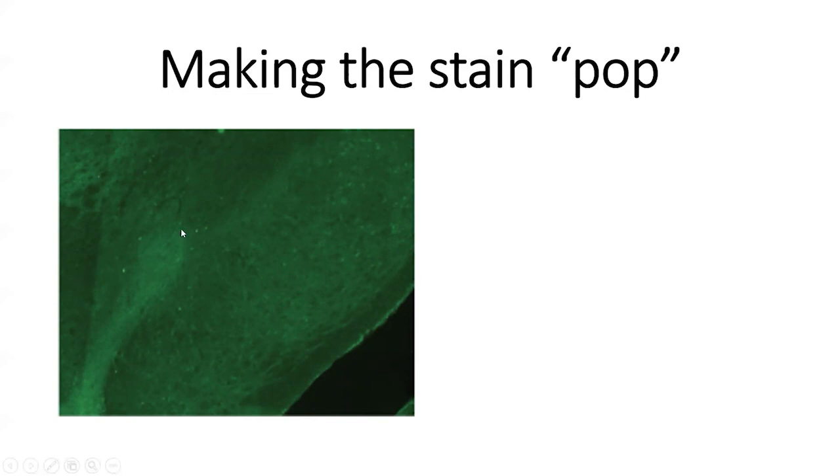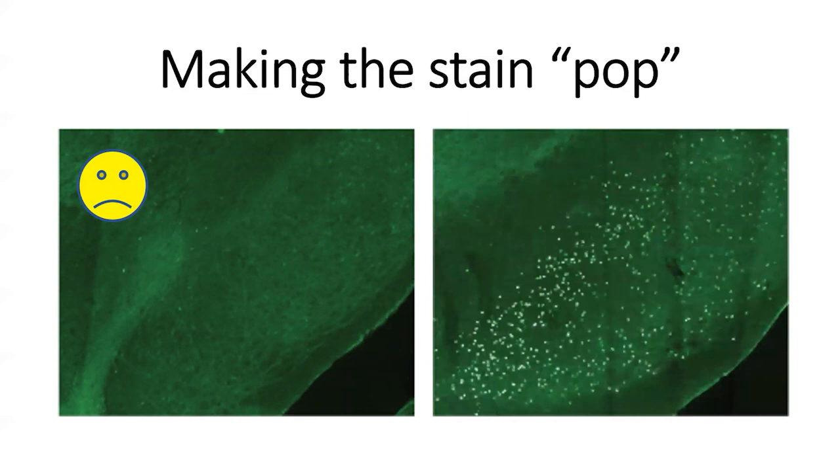And so one example of this here is we'll have our stain from before that we saw, where the background is pretty high. We can't really see much signal from the noise. There might be a few light-colored dots here and there, but for those who don't know what they're looking at, it's basically a background green haze. So it kind of leads to null results. We don't really know what we should be seeing here.